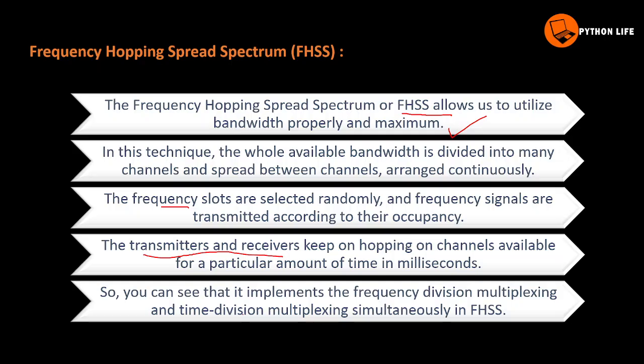FHSS implements both frequency division multiplexing and time division multiplexing. In the hopping spectrum, we can use frequency and time division multiplexing because the bandwidth, frequency, and amount of time are all factors in the hopping process.